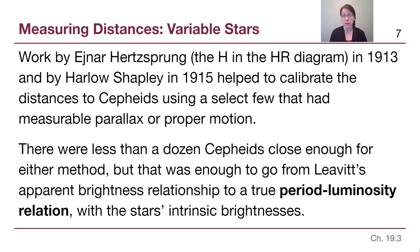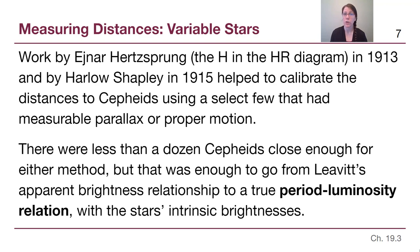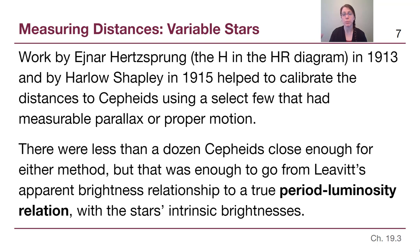Work by Einar Hertzsprung — the H in the HR diagram — and by Harlow Shapley helped to calibrate the distances, so that rather than just having a brightness-period relationship, we actually had a luminosity relationship. This is called the period-luminosity relationship for Cepheid variables. The way they calibrated it was by finding Cepheid variables that also had parallax measurements or proper motion measurements, giving a different way to know how far away they were, which allowed them to build this relation.